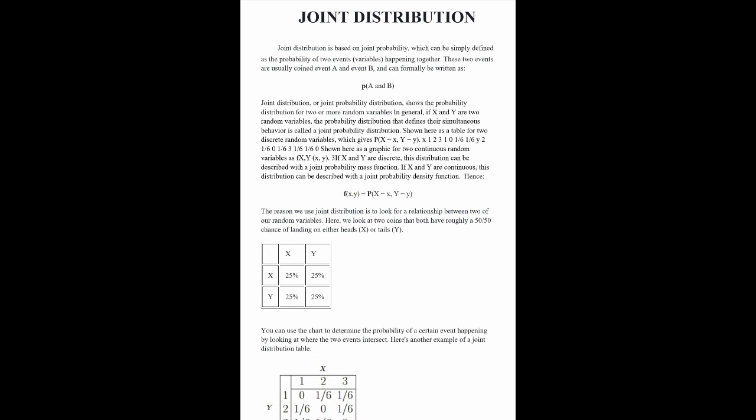Joint distribution or joint probability distribution shows the probability distribution for two or more random variables in general. If X and Y are two random variables, the probability distribution that defines the simultaneous behavior is called a joint probability distribution, shown here as a table for two discrete random variables which gives P of X and Y.